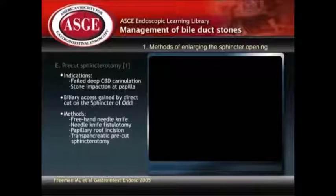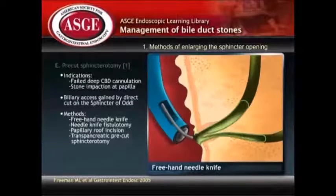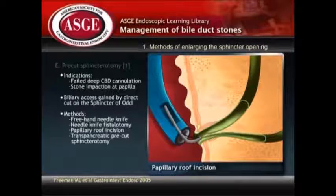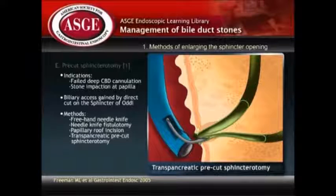Various methods have been described, including freehand needle knife, needle knife fistulotomy, papillary roof incision, and transpancreatic pre-cut sphincterotomy.